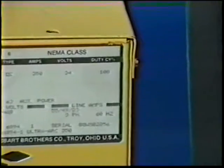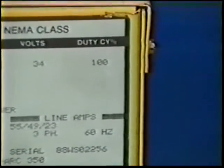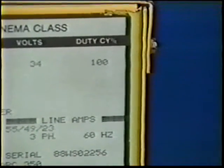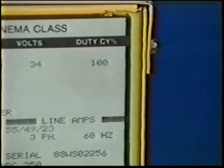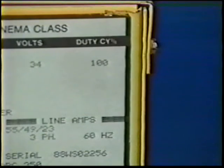With a 100% duty cycle, welding can be continued indefinitely without the need for a rest period. This is important for continuous wire operations, such as gas metal arc or submerged arc welding, where the welding may take hours to perform, especially in automatic and machine applications.